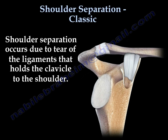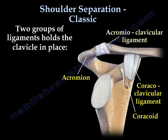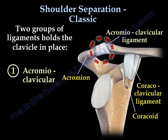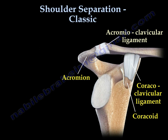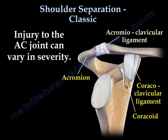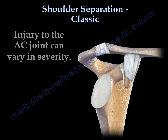Shoulder separation occurs due to tear of the ligaments that hold the clavicle to the shoulder. Two groups of ligaments hold the clavicle in place: the acromioclavicular and the coracoclavicular. Injury to the AC joint and the ligaments can vary in severity.